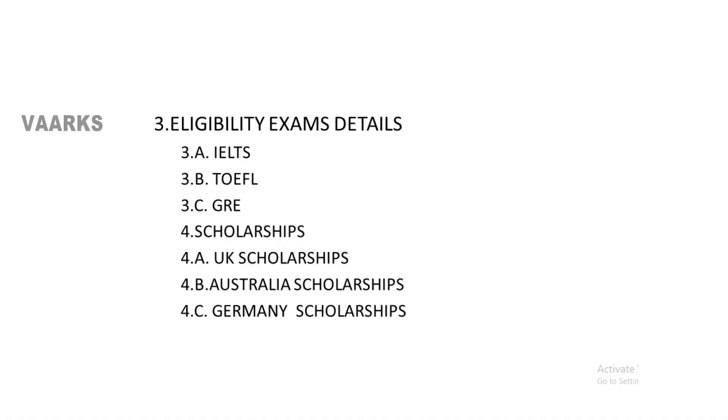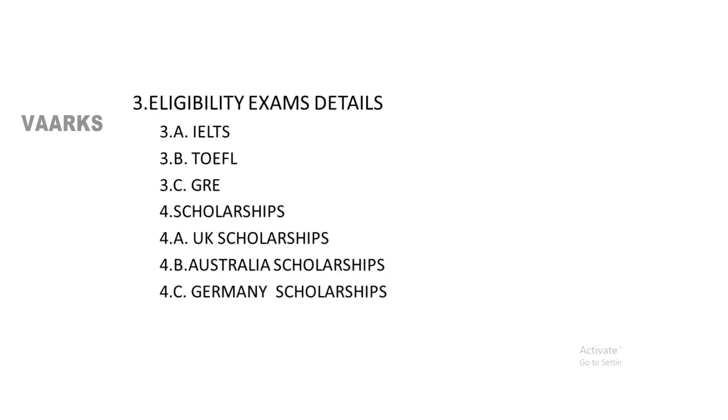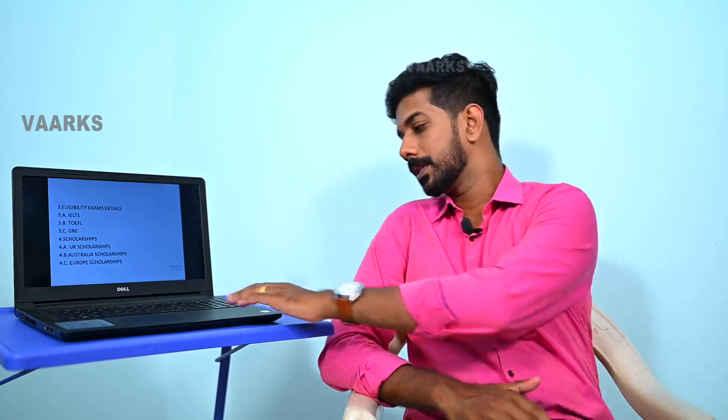The next section is the eligibility examination details, with a brief introduction of IELTS, TOEFL and GRE. The fourth section is the details of scholarships. I have introduced scholarship details for UK universities, Australian universities, and European universities — mainly German universities — because most US universities provide stipends as part of their PhD program, and Canadian universities follow the same pattern. So scholarship details are provided for three countries mainly: UK, Australia and Europe.